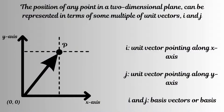To understand all this, we have to start somewhere. Let us start from a point in a two-dimensional space. We can describe the position of this point, say p, by some multiple of unit vectors i and j. Here, i and j are vectors of unit length pointing along the x and y axis, respectively. This pair, i and j, in terms of which any vector can be expressed, are also called the basis vectors or the basis.